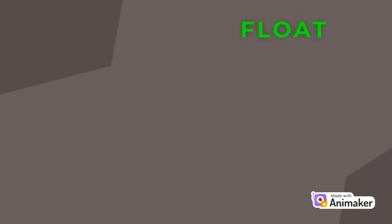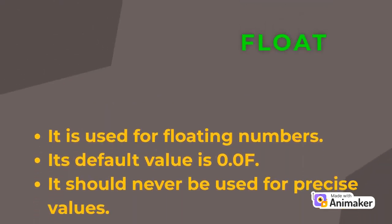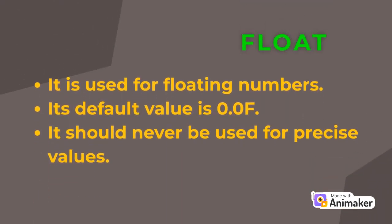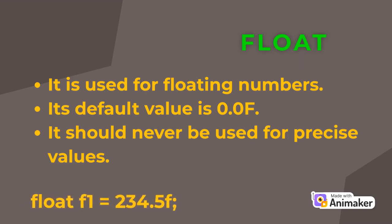The float data type is used to store floating point numbers. Its value range is unlimited. The float data type should never be used for precise values. Its default value is 0.0. For example: float f1 = 234.5f.